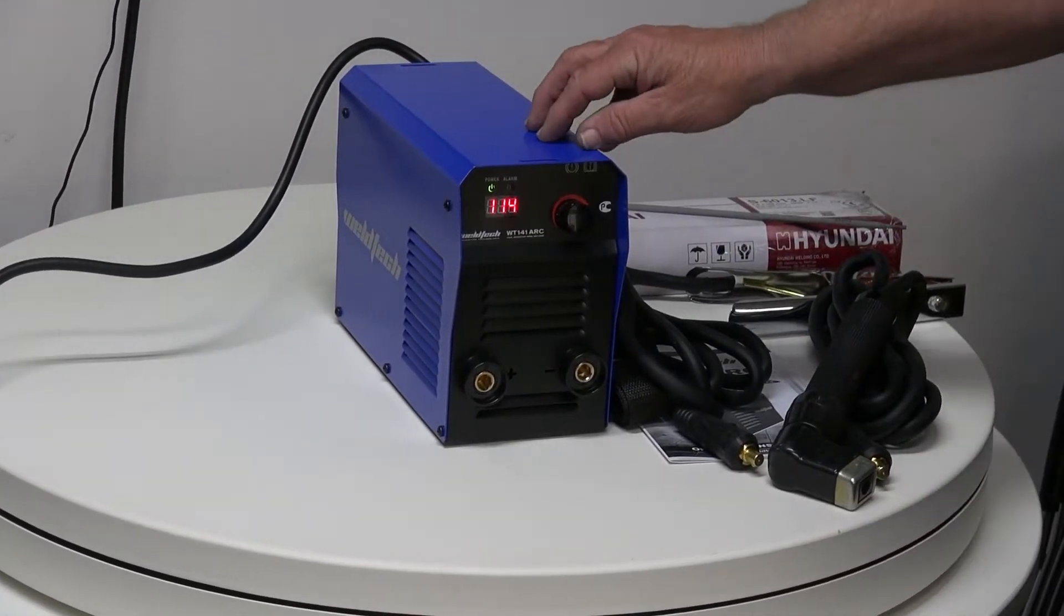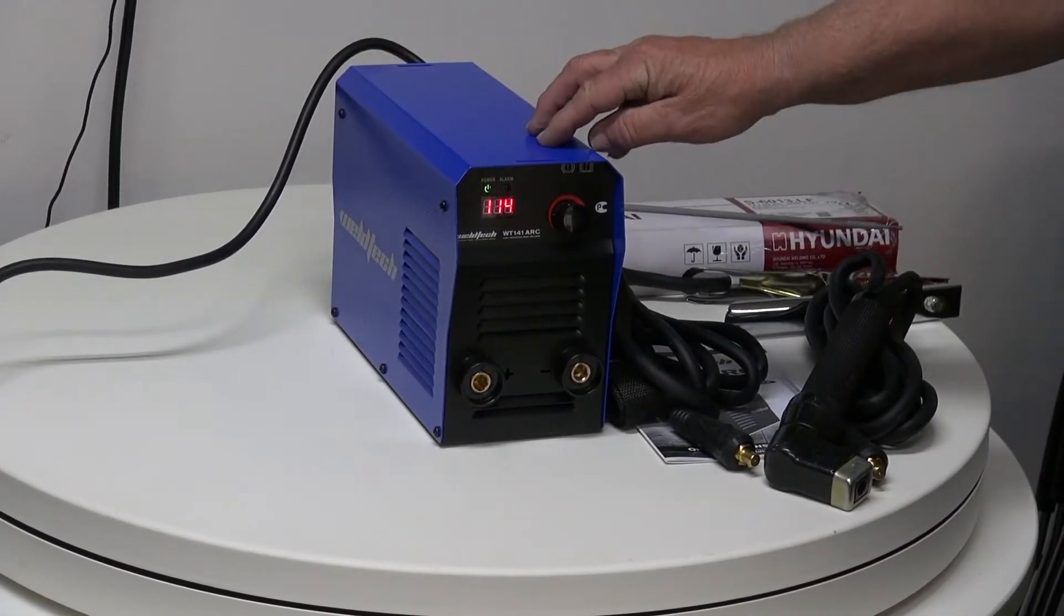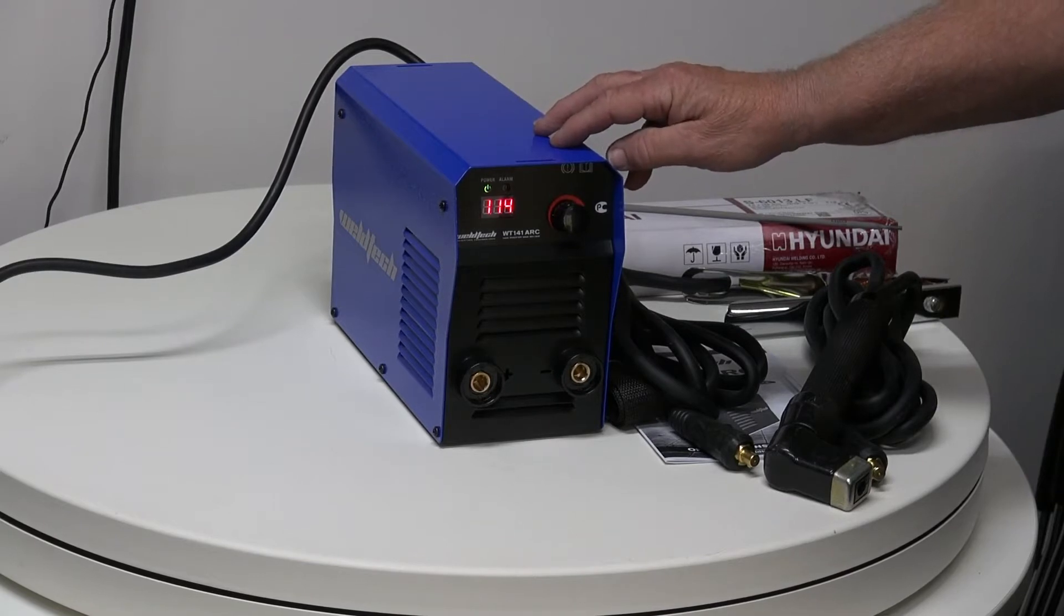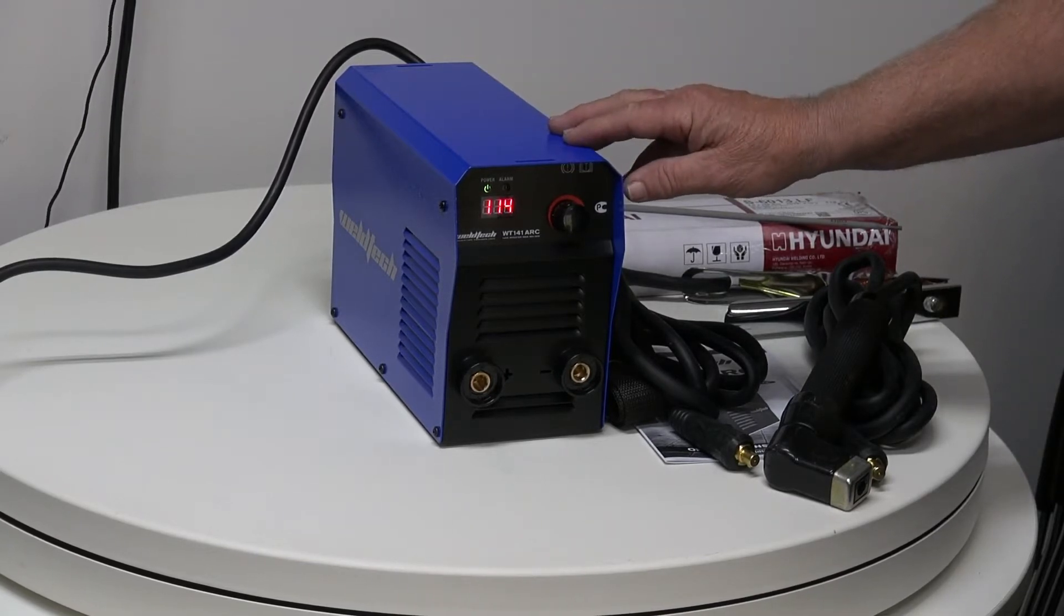Today we're going to talk about the WeldTech 141 arc welder. This little machine is ideal for running a 2.5 electrode or a 3.2 electrode. It is very simple to use as long as you remember how the setup works.